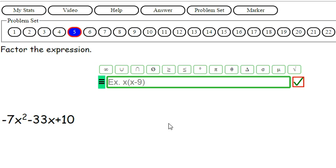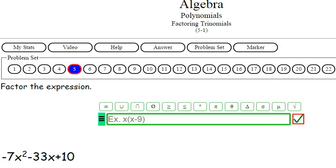The last couple problems have been terrible. I'm trying to figure out. Alright, so we got negative 7x squared minus 33x and plus 10.